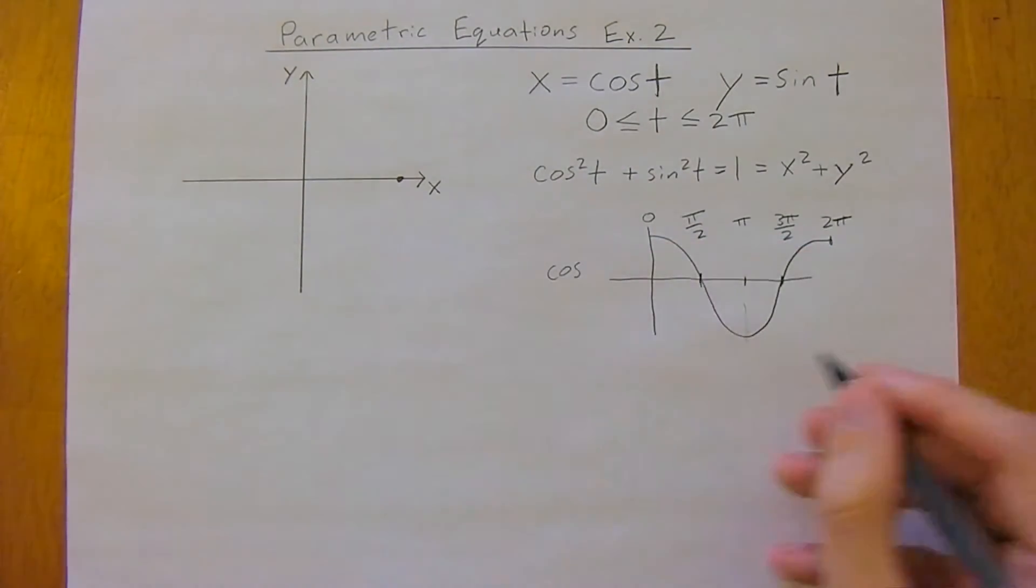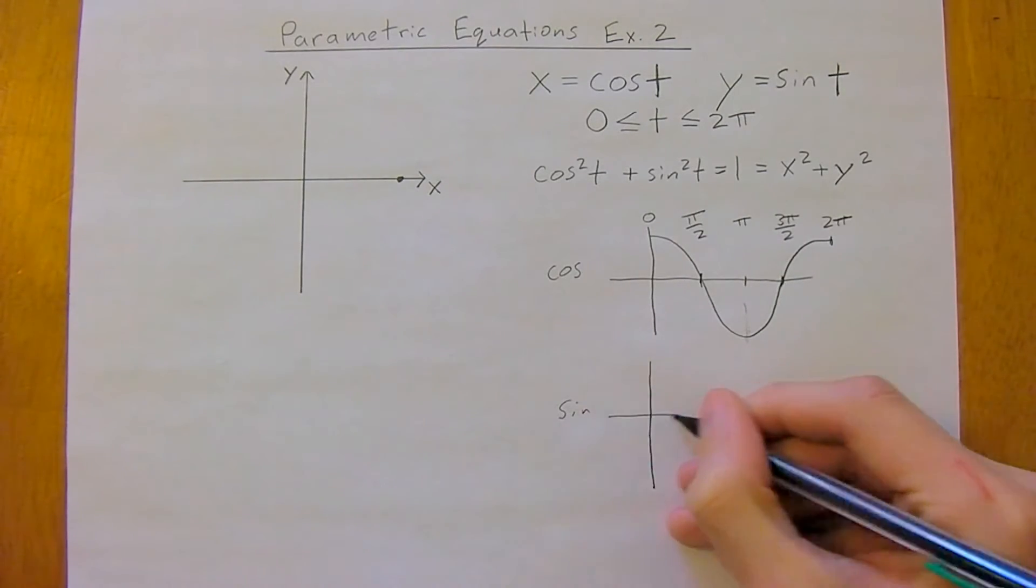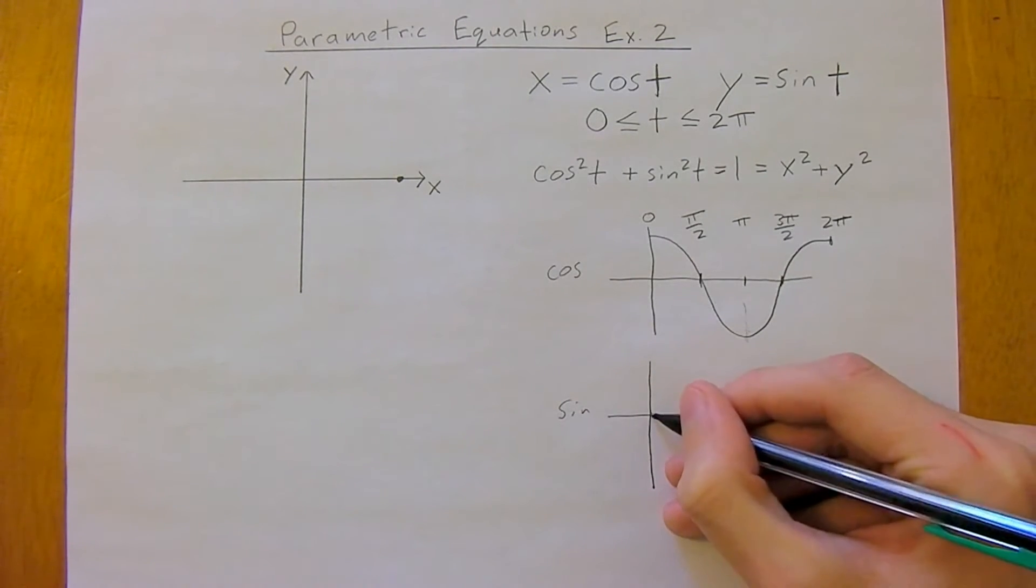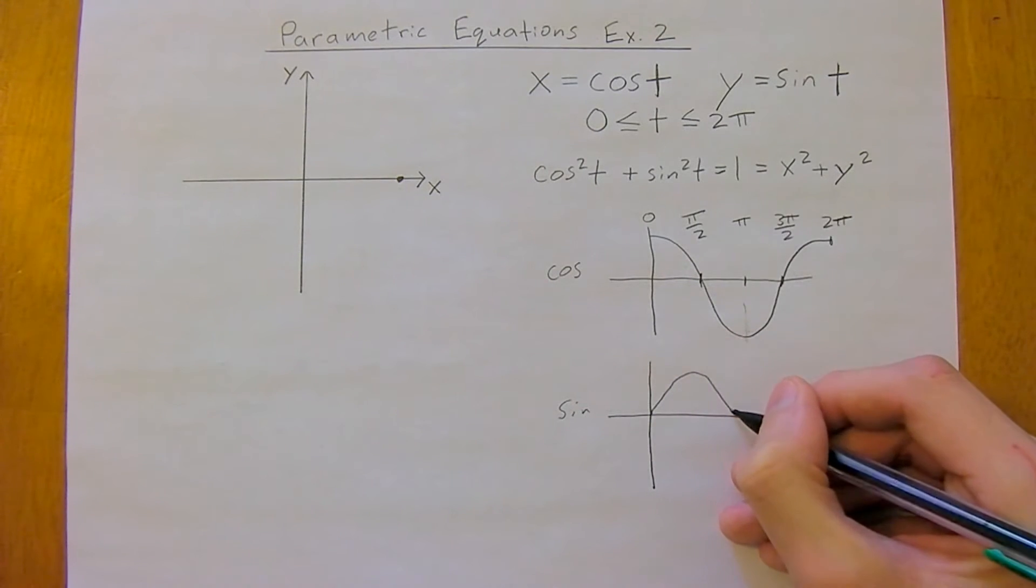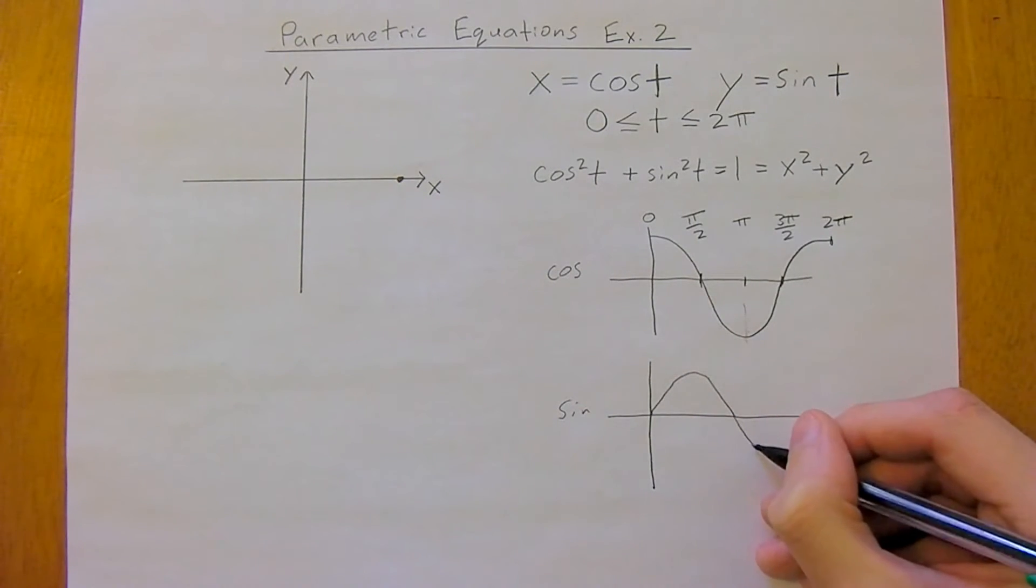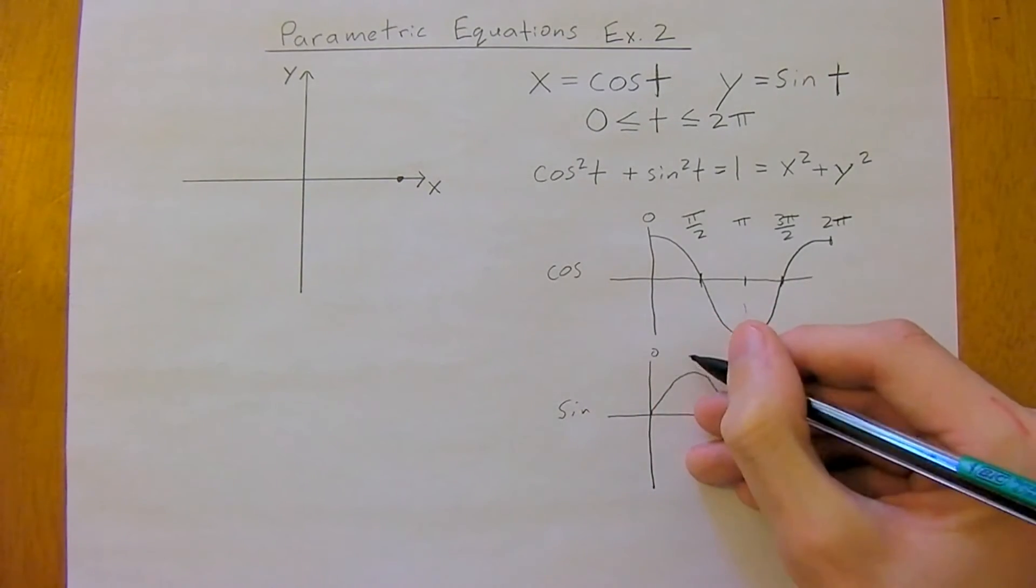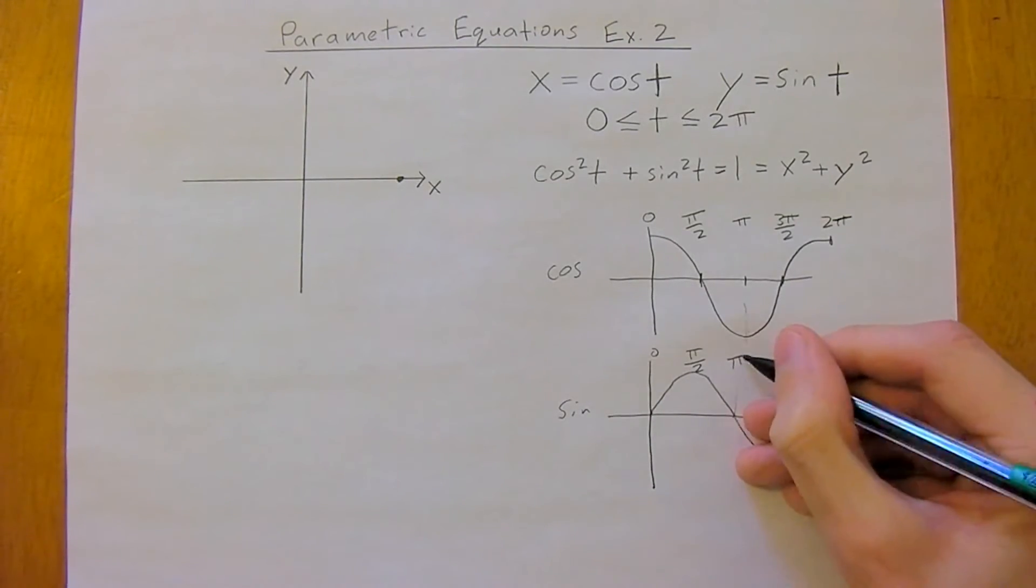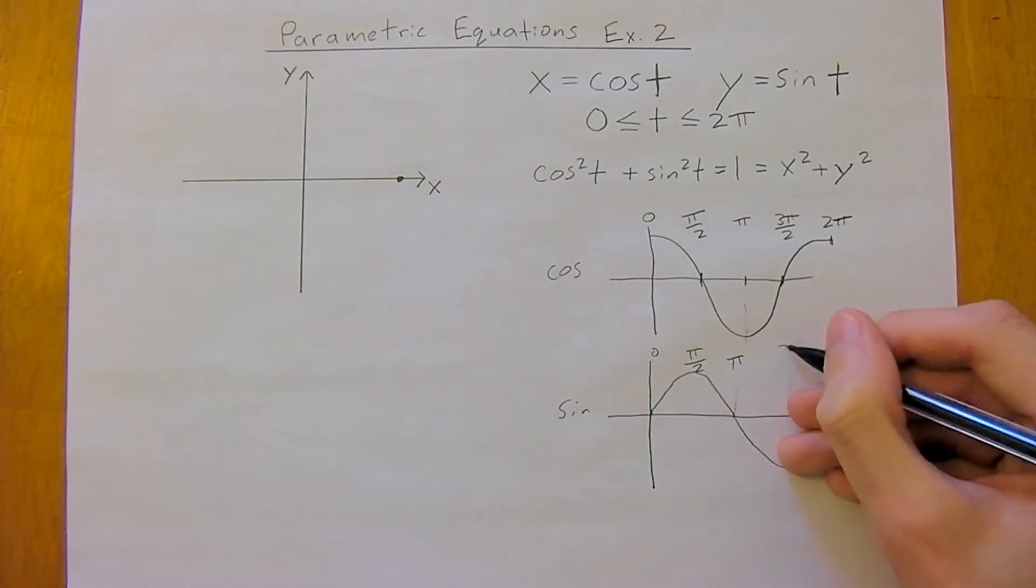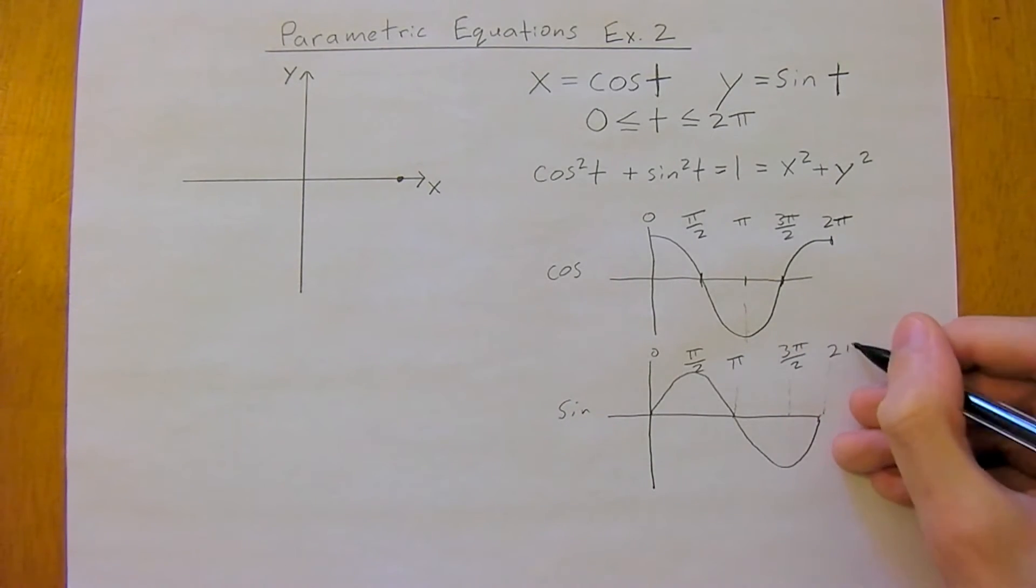So this is for cosine, and for sine, the graph starts at 0, then goes up and down, crosses over at pi, and back up again at 2 pi. So this is 0, so this is pi over 2, and here is pi, 3 pi over 2, and back to 2 pi again.